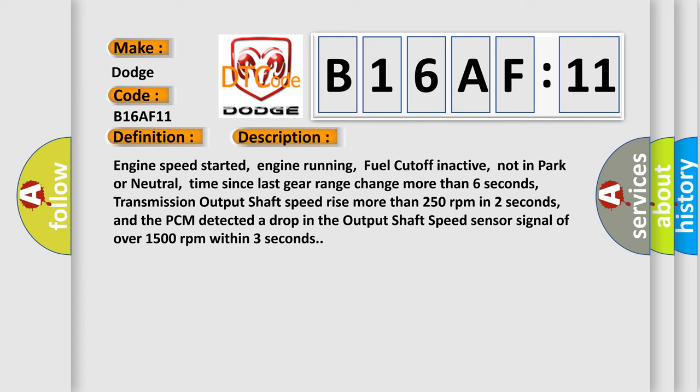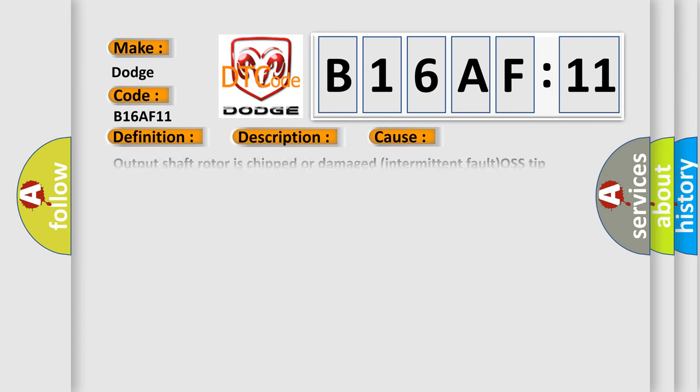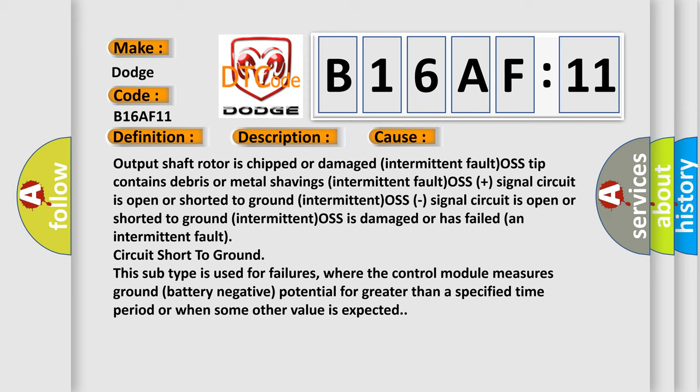This diagnostic error occurs most often in these cases: output shaft rotor is chipped or damaged, intermittent fault OSS tip contains debris or metal shavings, intermittent fault OSS plus signal circuit is open or shorted to ground, intermittent OSS minus signal circuit is open or shorted to ground, or intermittent OSS is damaged or has failed.